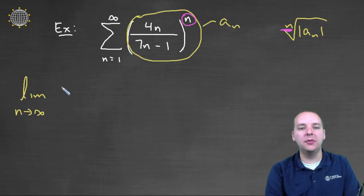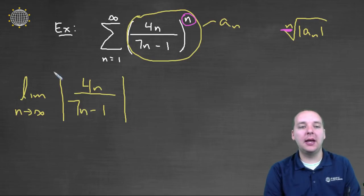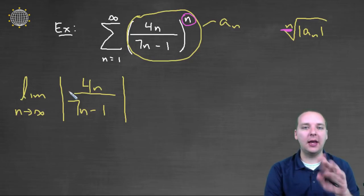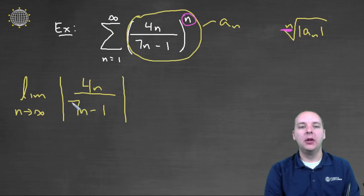Now it will be in absolute values, 4n divided by 7n minus 1. Now for our particular example, the absolute values don't really make a difference because our terms are already positive. But occasionally if you had somebody that alternated plus minus plus minus, the absolute values would annihilate that alternating type term.